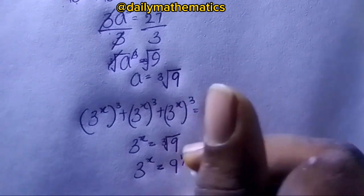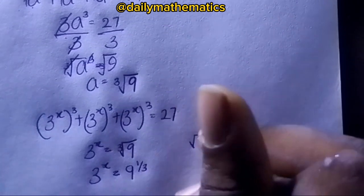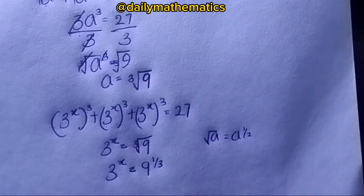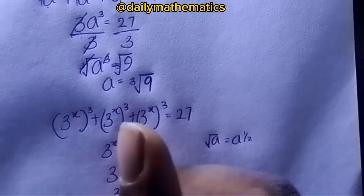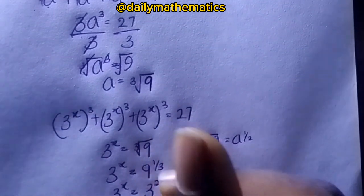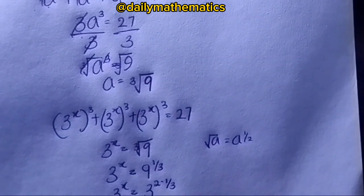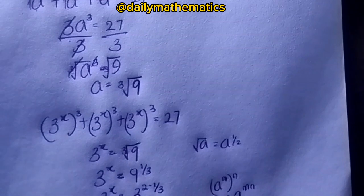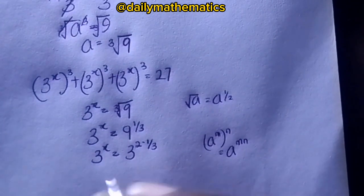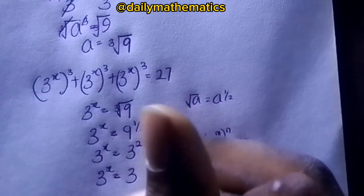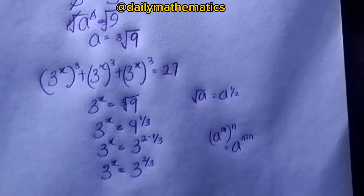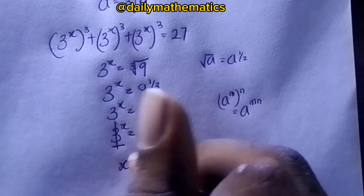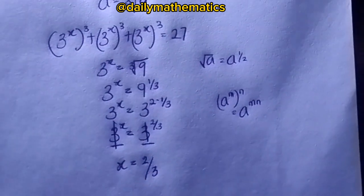Since 9 = 3², we have 3^x equals 3² raised to the power of one-third, which equals 3 raised to the power of 2 times one-third, giving 3^x = 3^(2/3). Since the bases are the same, we can equate the exponents, so x equals 2/3. That is the result from Method 1.